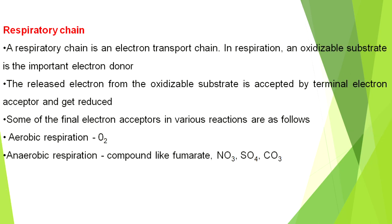Each such pair of substances is referred to as an oxidation-reduction system — that means OR system. Next, the respiratory chain. A respiratory chain is an electron transport chain. In respiration, an oxidizable substrate is the important electron donor. The electrons released from the oxidizable substrate are accepted by a terminal electron acceptor and get reduced.